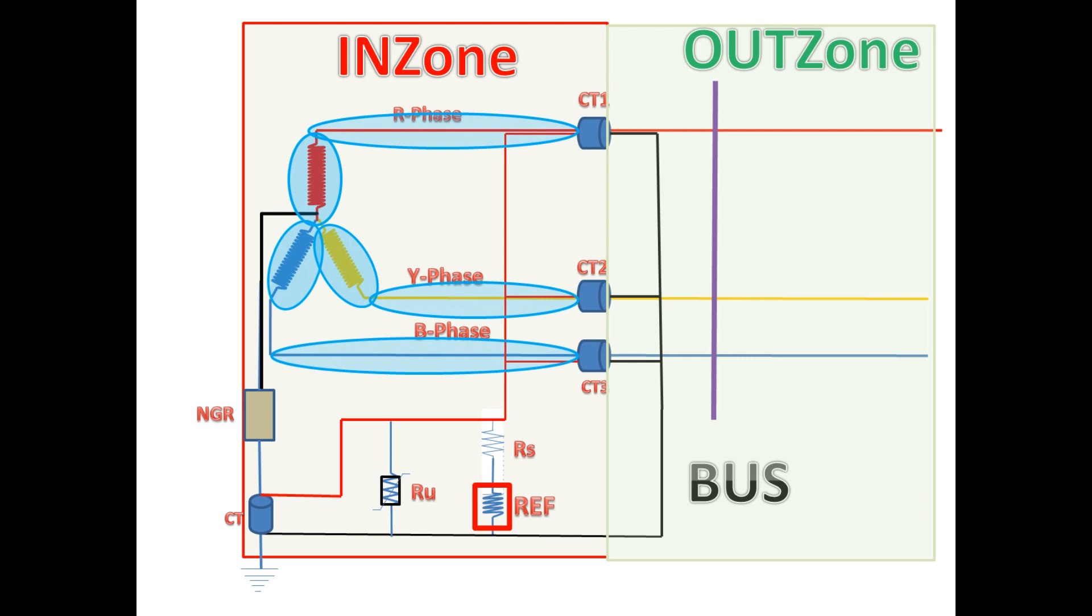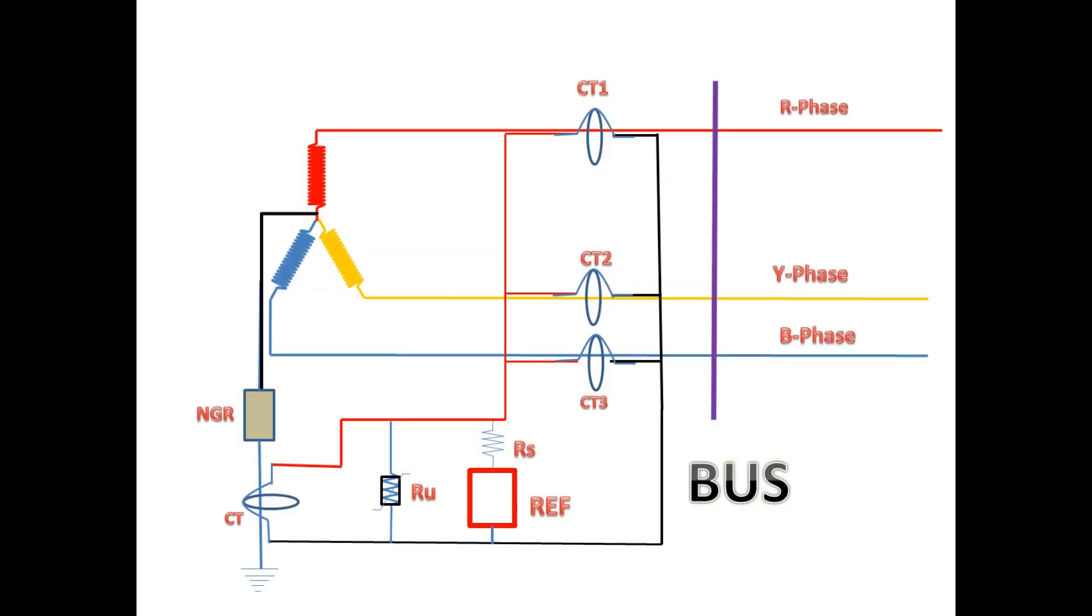Now let's see the REF circuit. In the REF circuit we have one REF relay and two resistors. One is a nonlinear resistor and the other is a linear resistor. The linear resistor is also known as the stabilizing resistor, normally denoted by RS. We will see more about these two resistors in the next video.